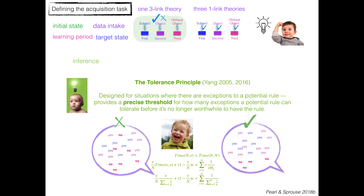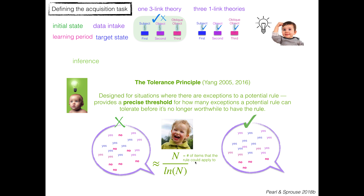The tolerance principle is designed for situations where there are exceptions to a potential rule. Imagine instances that could obey a particular rule, generalization, or link — you pay attention to how many follow it versus how many don't. The tolerance principle provides a precise threshold for how many exceptions a potential rule can tolerate before it's no longer worthwhile to have the rule from the perspective of knowledge storage and retrieval. That threshold is well approximated by the simple equation n divided by the natural log of n, where n is simply the number of items the rule could apply to. If you have fewer exceptions than this number, the rule is worth having; if more, it is not.